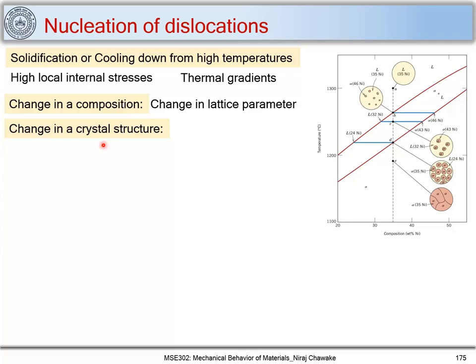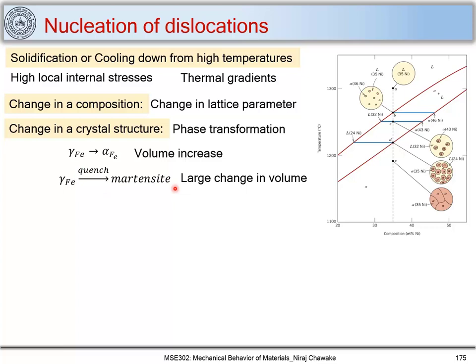The third reason is a change in crystal structure, which occurs during phase transformations. A common example is gamma iron transforming to alpha iron, where there is a volume increase, and this volume increase leads to formation of dislocations. Similarly, when gamma iron is quenched it forms martensite, and this large volume change causes a large increase in dislocation density.